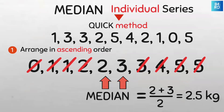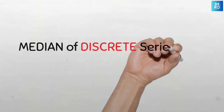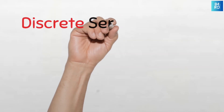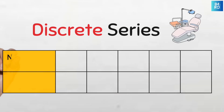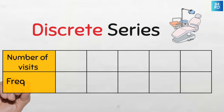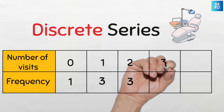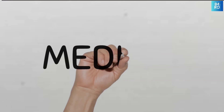Now let's go to the next data set — the discrete series data set. The median of discrete series data. This is a discrete series data set on the number of dental clinic visits of a sample of 10 children in the last one year. We know this is discrete series data because we can see the variable and the corresponding frequencies. So how do we find the median of this data?